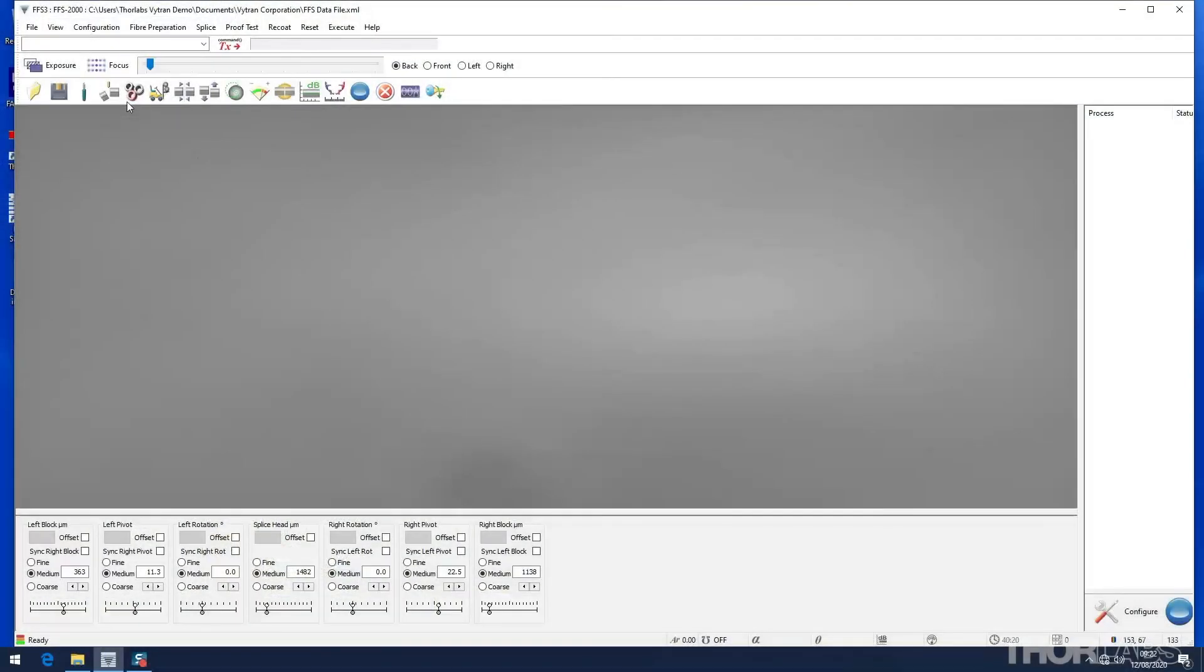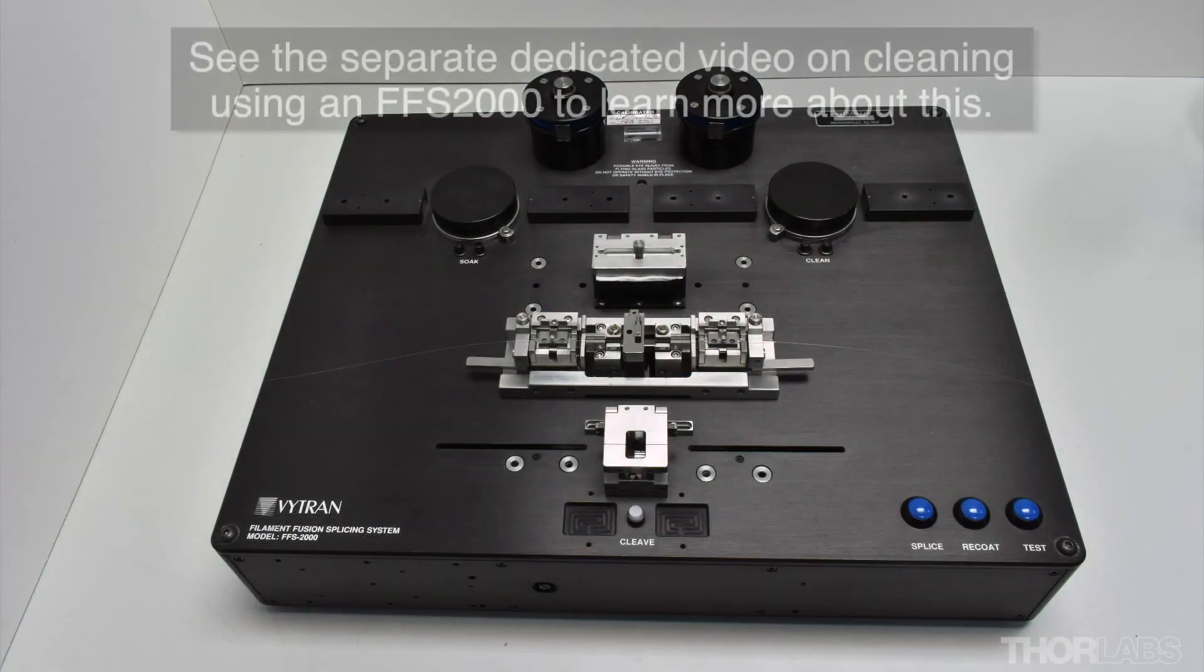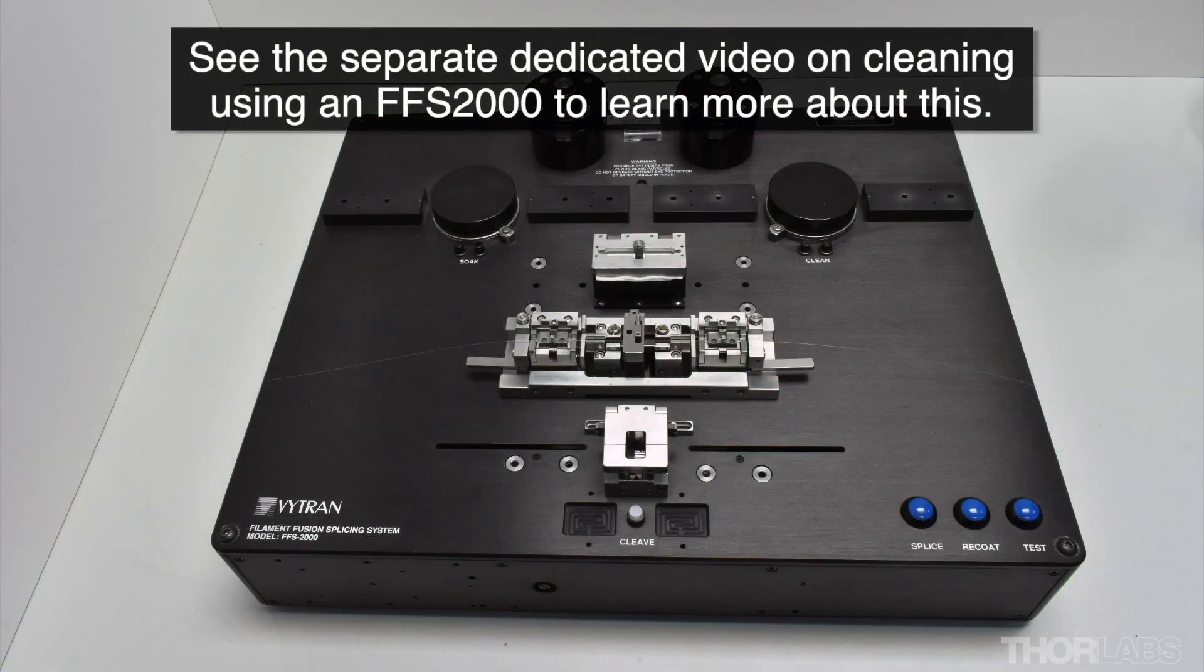In the FFS3 GUI, the stripping parameters can be adjusted by selecting Fibre Preparation, Strip Setup. Here the background and boost currents and the timings can be adjusted.